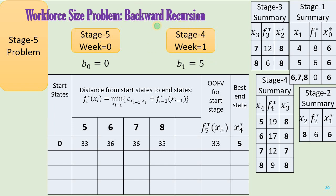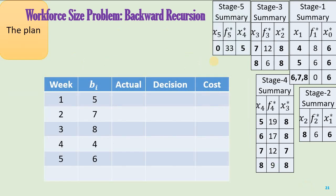Now we move to the stage five problem, which is the last one. At the start, we have zero employees — that is our assumption. In week one, you have 5 or more employees. For example, going from 0 to 6 means hiring 6 employees, maintaining one extra worker, plus the past cost for state 6 of 17 units. The same logic applies for transitions to 7 and 8. The optimal objective function value is 33, and the best end state is 5. This is the stage five summary.